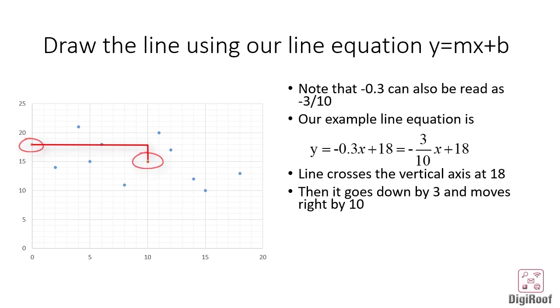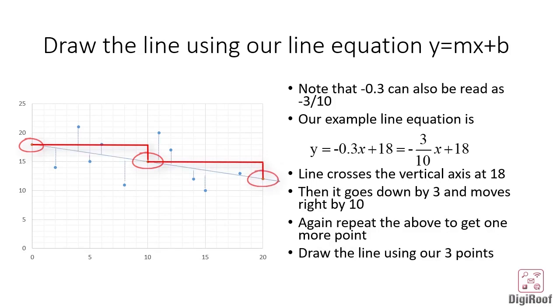We will repeat the process one more time. From this second mark, we will move right by 10 and then again move down by minus 3 to make our third mark. Now we can connect the three orange marks we made using the intercept and slope values to make the best fitting line or regression line for our example data.